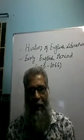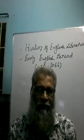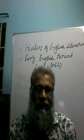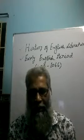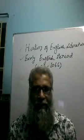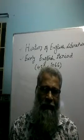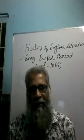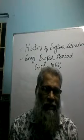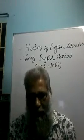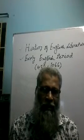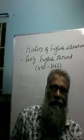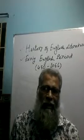English literature began far back with the beginning of the history of the people on the continent of Europe. It began in the fifth century when Jutes, Angles and Saxons came to England and started their reign. This period ended in 1066 with the Norman Conquest — the conquest of England by Duke William of Normandy, which is a province of France.